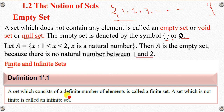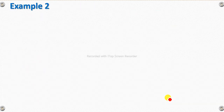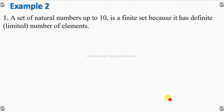The set which consists of a finite number of elements is called a finite set. The number of elements in a finite set is a definite number.